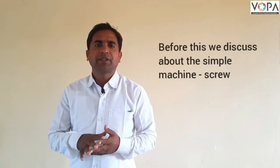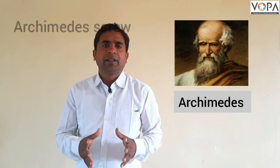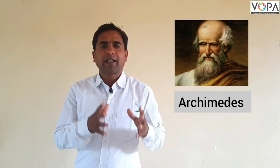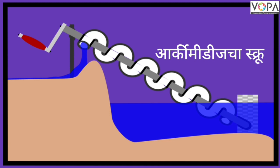Before this we understood some simple machines like the screw, and now we discuss the Archimedes screw. A Greek scientist found this screw, so it is called the Archimedes screw. It is used to lift water from the hold of a ship. It is a round pipe fitted with a rod inside it, placed at a 45 degree angle with one end inside the water. When the rod is rotated, the water moves in the upward direction and is stored in a device.